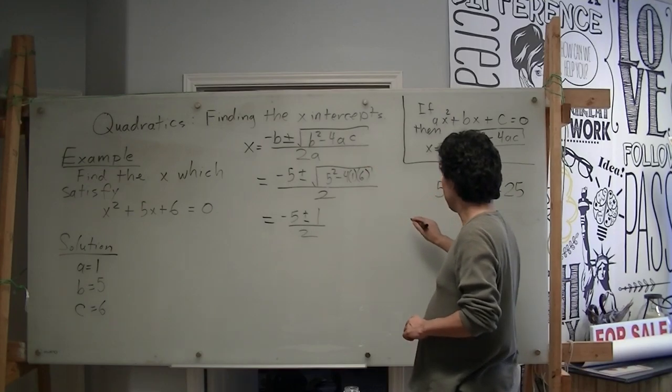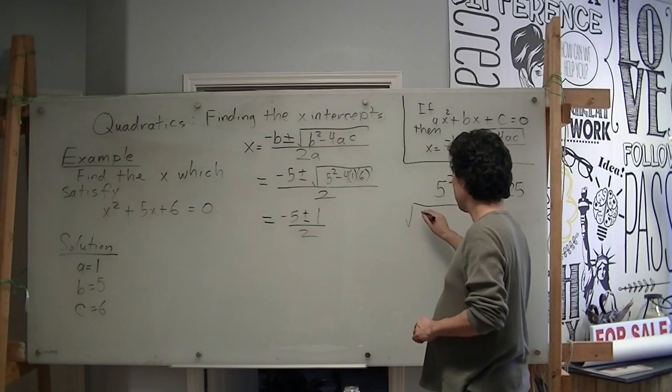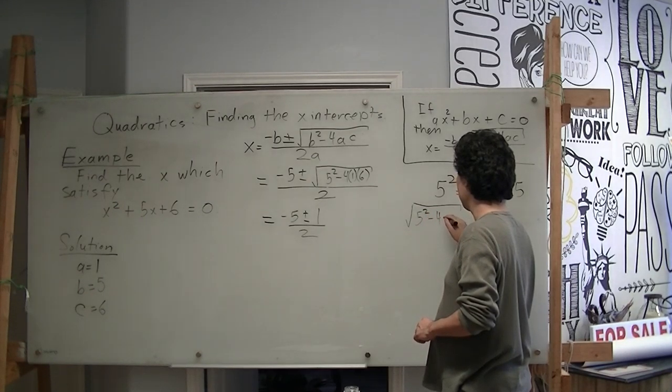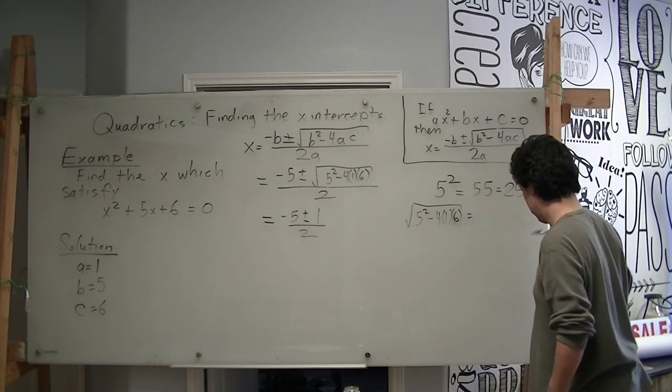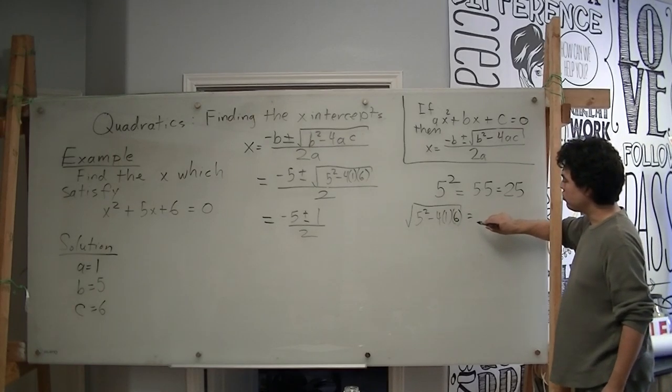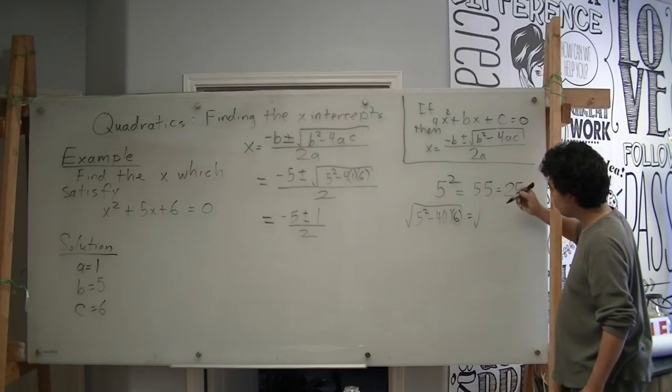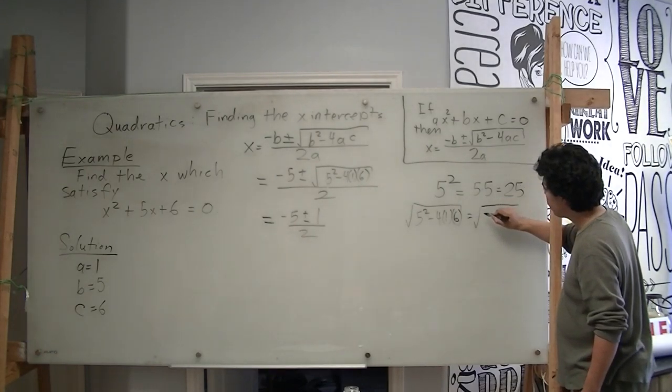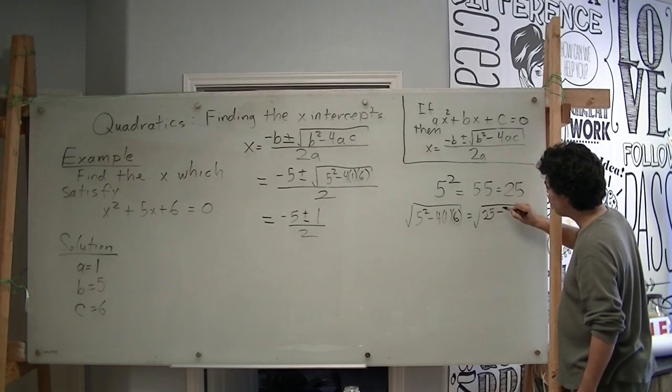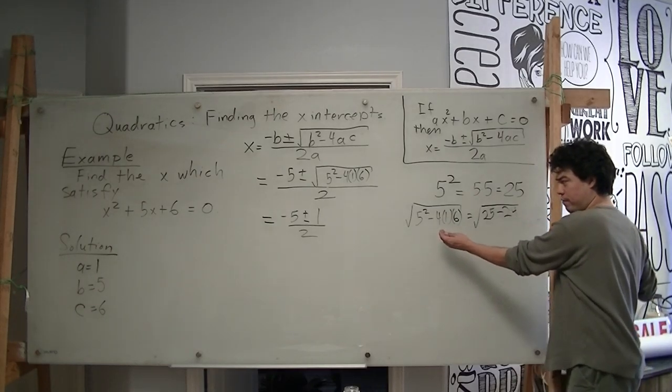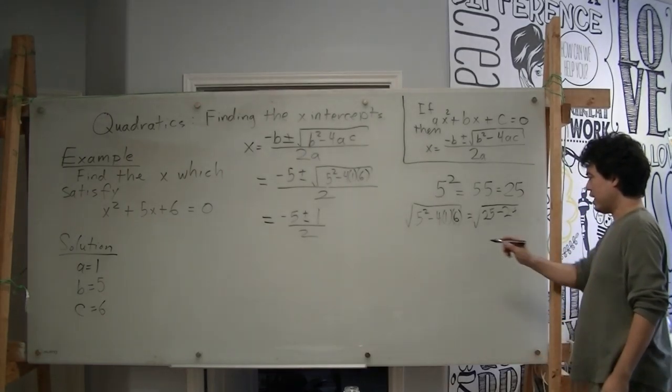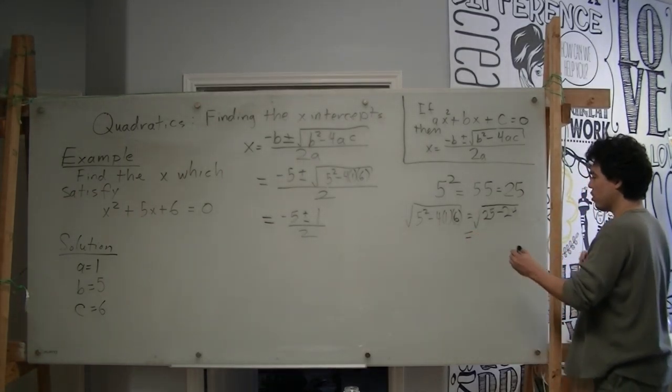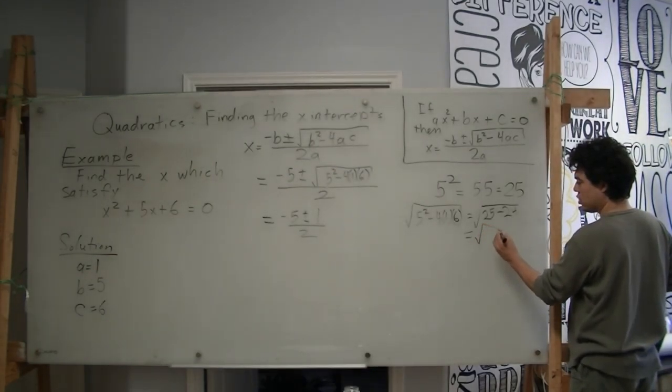So I'm going to do this part here. The square root of 5 squared minus 4 times 1 times 6. So we saw that the 5 squared is 25. So this becomes the square root of 25 minus 24. 24 because 4 times 1 is 4 times 6 is 24. That gives us the square root of 1.